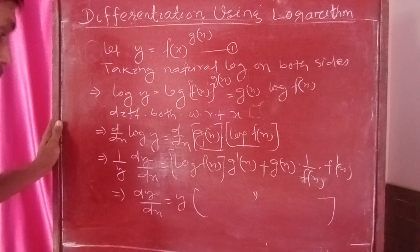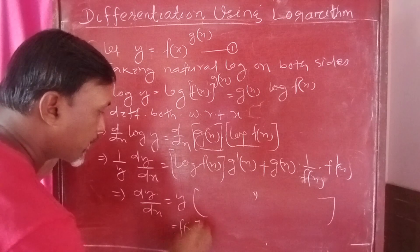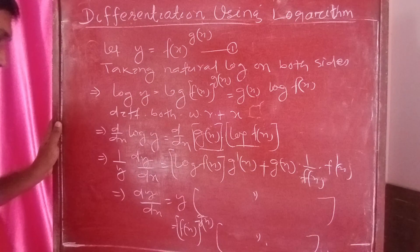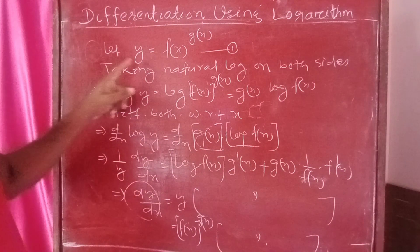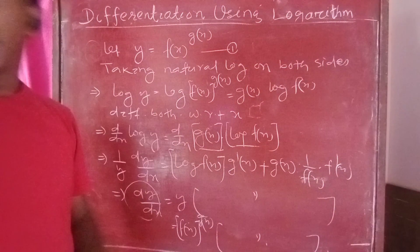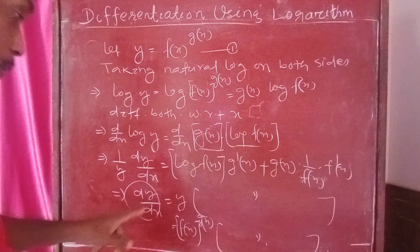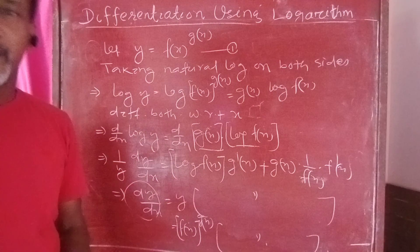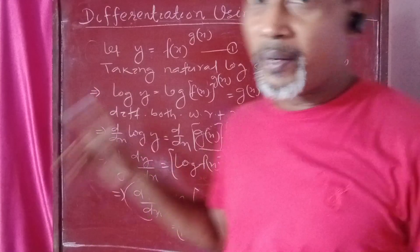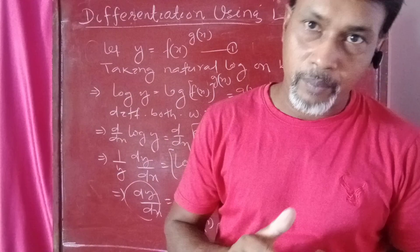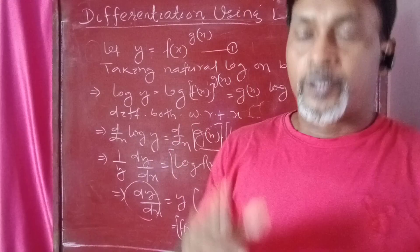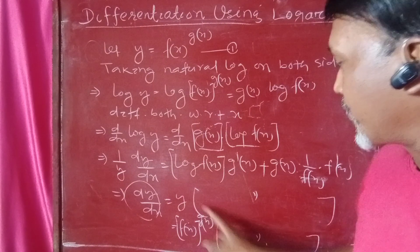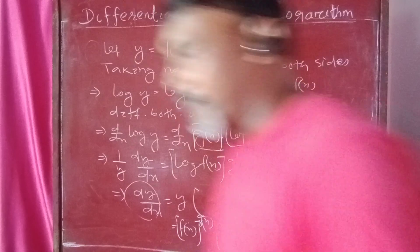So dy/dx equals y times the right-hand side expression. Here y is f(x) to the power g(x), so the derivative of f(x) to the power g(x) is f(x) to the power g(x) multiplied by the result. This completes the derivation for case one.